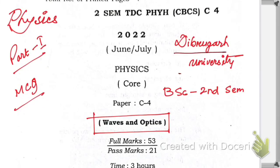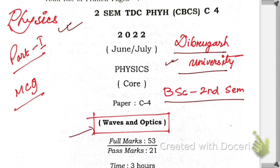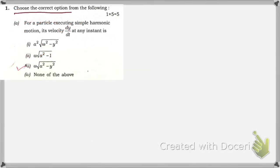Hello friends, welcome to my YouTube channel. Today we are going to solve De Brugger University question paper of DSC second semester Wave and Optics of Physics. This is Part 1 — we're going to complete this paper in three or four videos. Before we start, please subscribe to the channel, stay connected, share with your friends, hit the thumbs up button, and hit the bell icon so you get notified when a new video is uploaded. Now let's start.